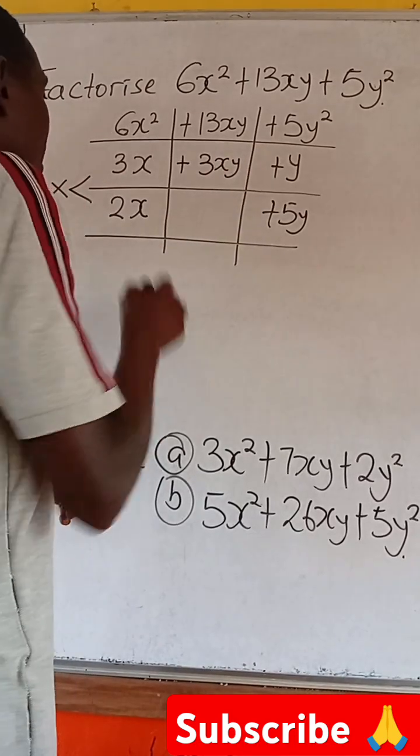So if we multiply now, we have 3x times y will give us 3xy, that's plus. Then 2x times 5y will give us plus 10xy. So if we add the two together, it will give us plus 13xy.